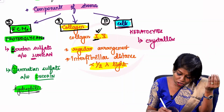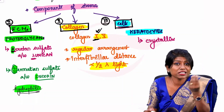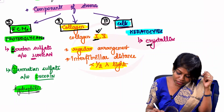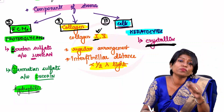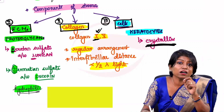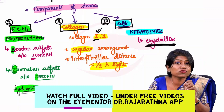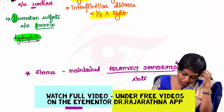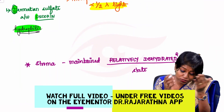The cells present in corneal stroma are called keratocytes ('kerato' = cornea, 'cyte' = cell). Keratocytes contain a protein called crystallin — importantly, crystallin is not only present in the lens but also in the cornea, specifically within the keratocytes of the stroma.